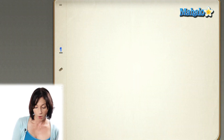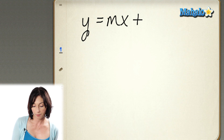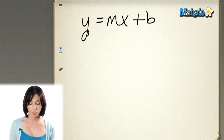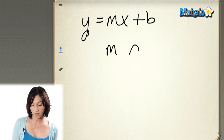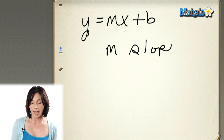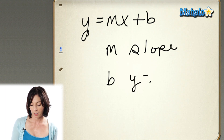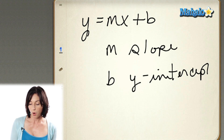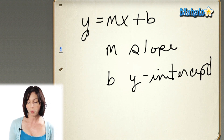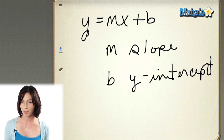Slope-intercept form is a standard form of writing the equation of a line, and it looks like this: y equals mx plus b. In this equation, m is the slope of the line, and b is the y-intercept — that's the place where the line will cross or intercept the y-axis.